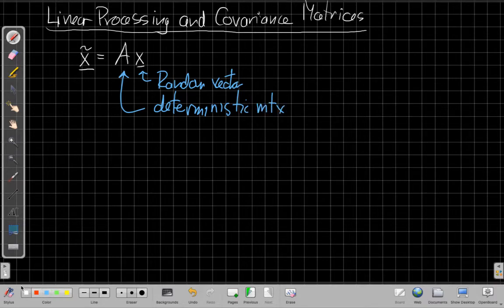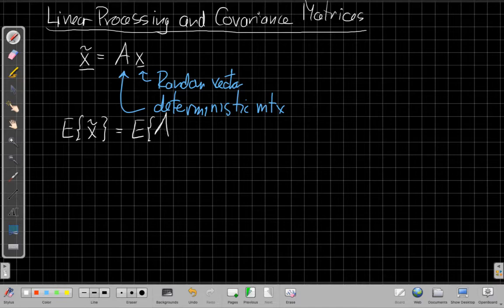And so the things we care about with random variables in general, whether they're vectors or scalars, is what's the moments, what are the first few moments. So the first question is, what's the expected value of X tilde? And this follows pretty directly from just using properties of expectation. I can plug this in, definition for X tilde. I should be clear here that tilde here is not necessarily